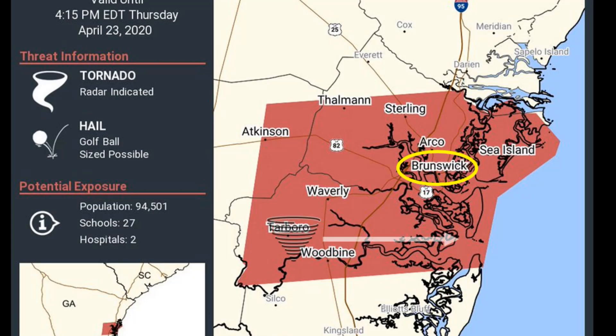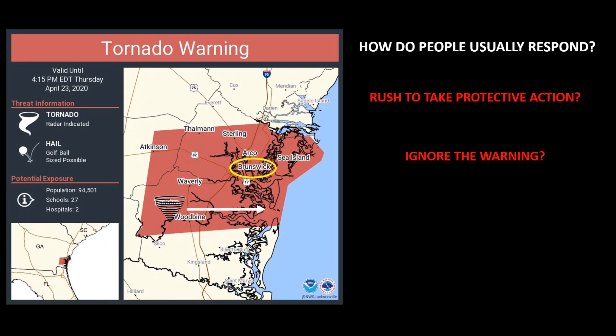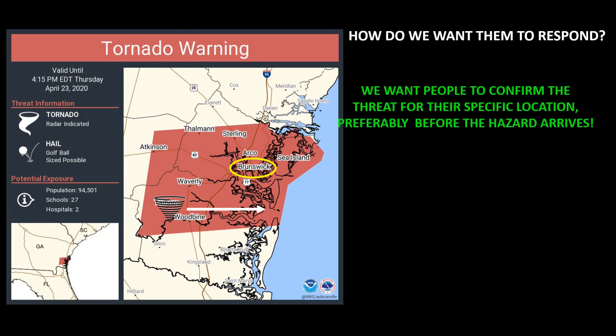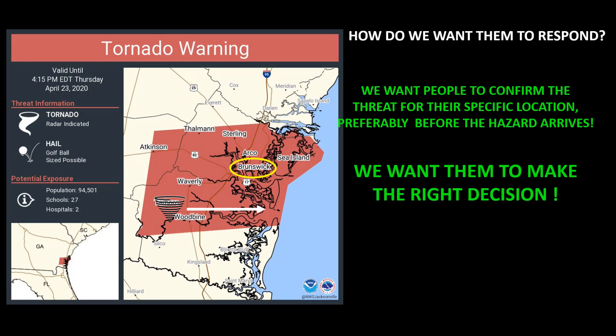In this warning example, the tornado threat was actually across the southern part of the warning area. So what do we want people to do when a warning is issued for their area? We want people to confirm the danger and make the right decision — not simply to take cover if in the warning area, and not to ignore the warning, but rather to take cover when in danger, and not take cover but just monitor the threat when not in danger.